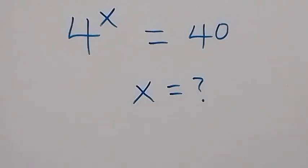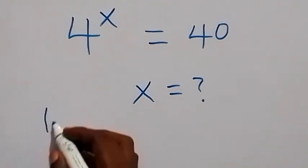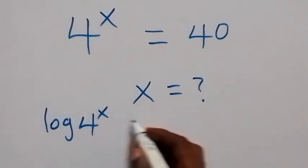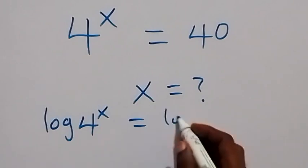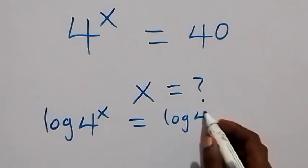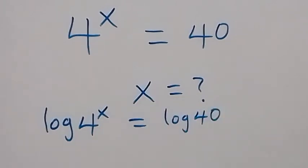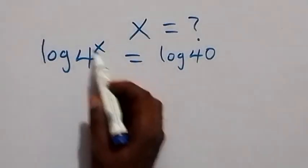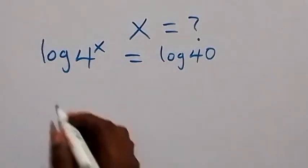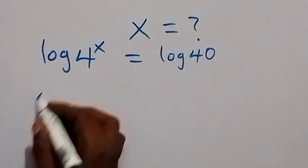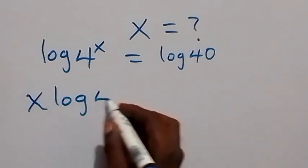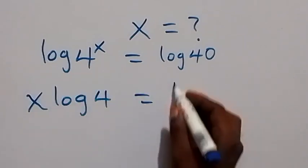From here we can take the log on both sides. We have log 4 raised to power x equals to log 40. Then when we apply the law of logarithms, this power of x can come to the front, and we have x log 4 equals to log 40.